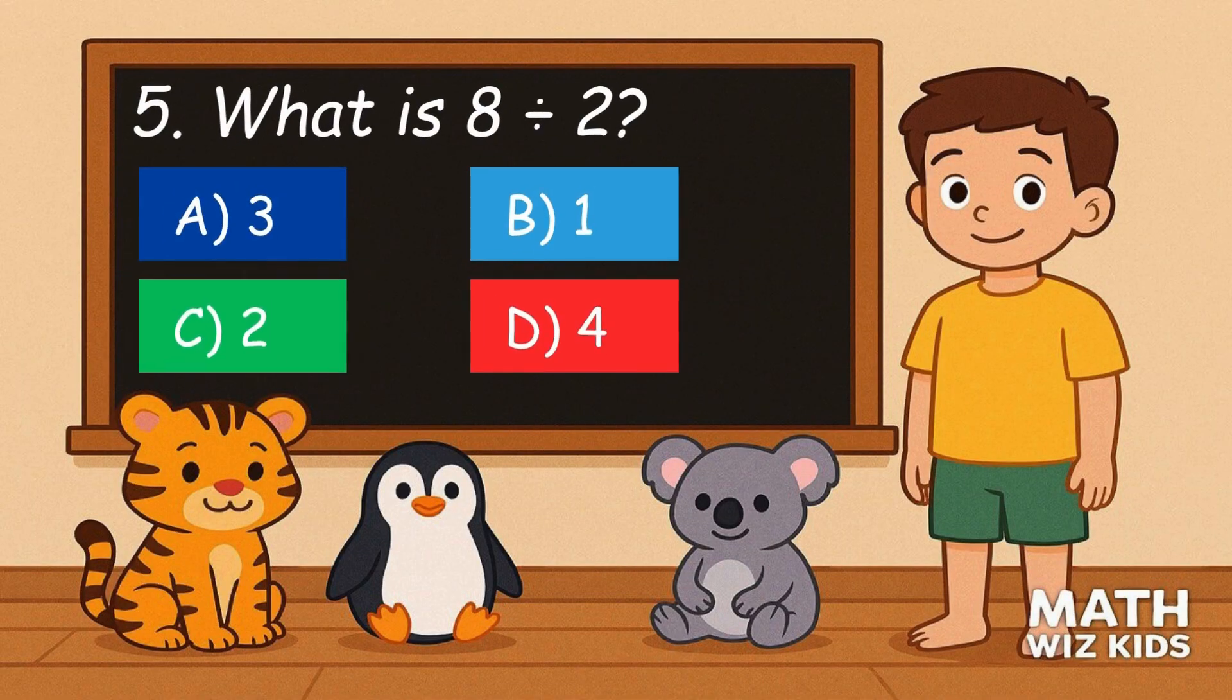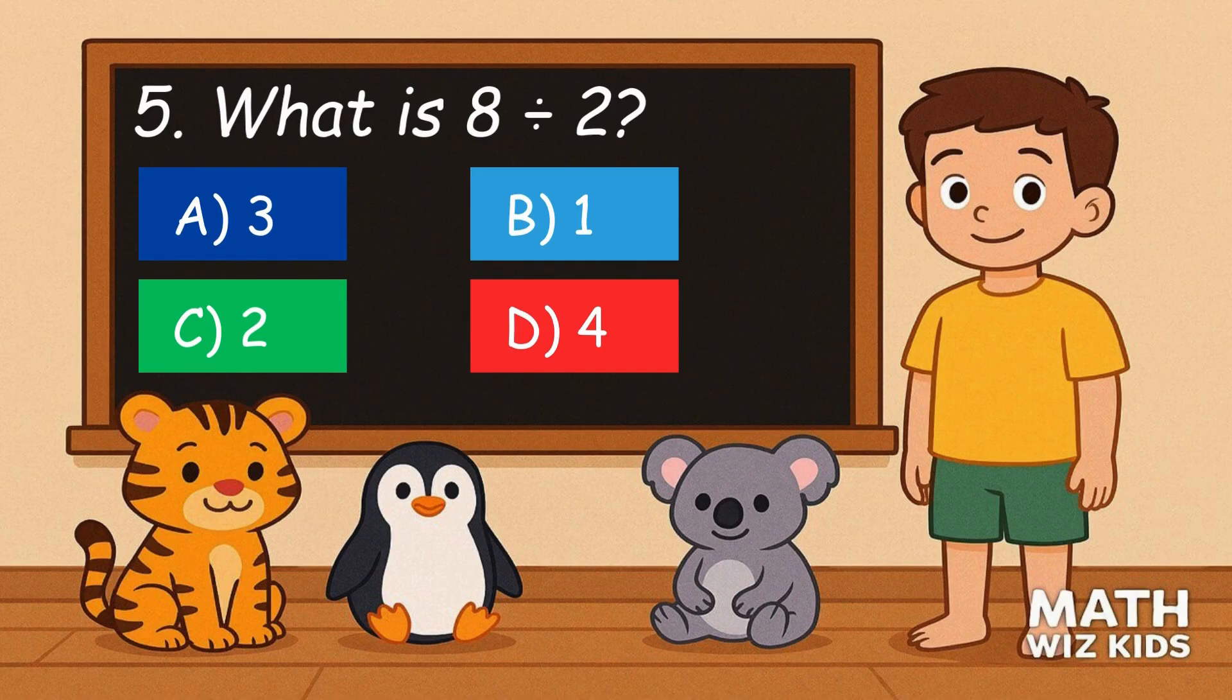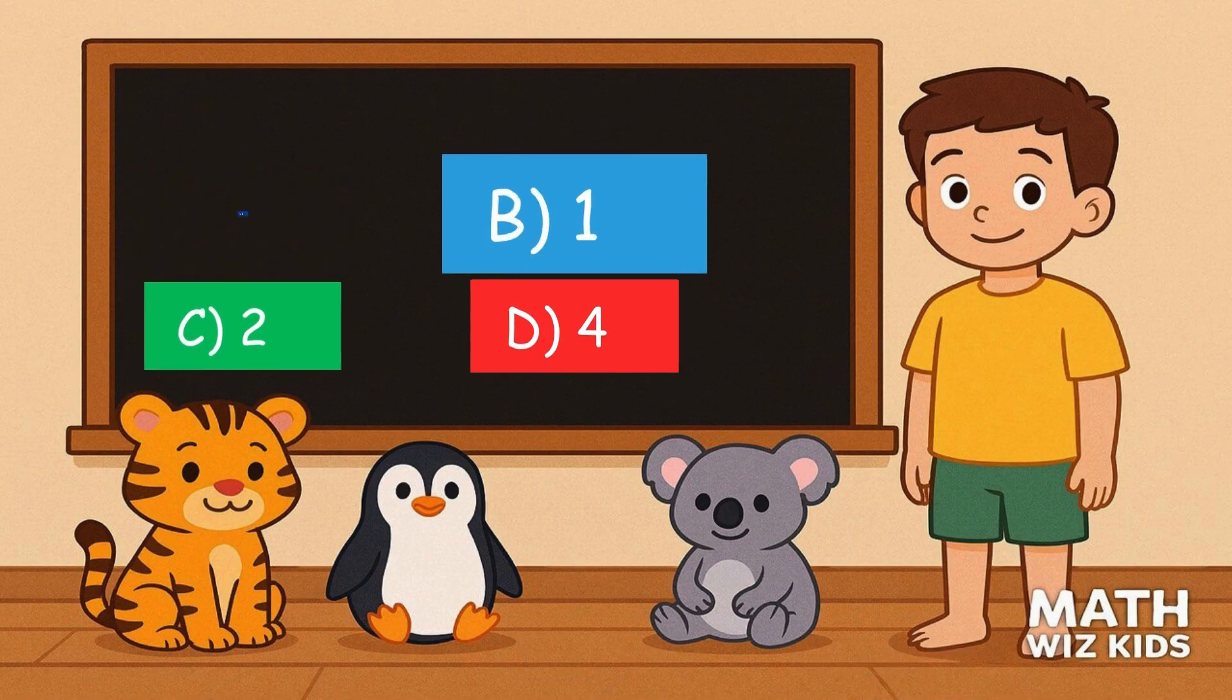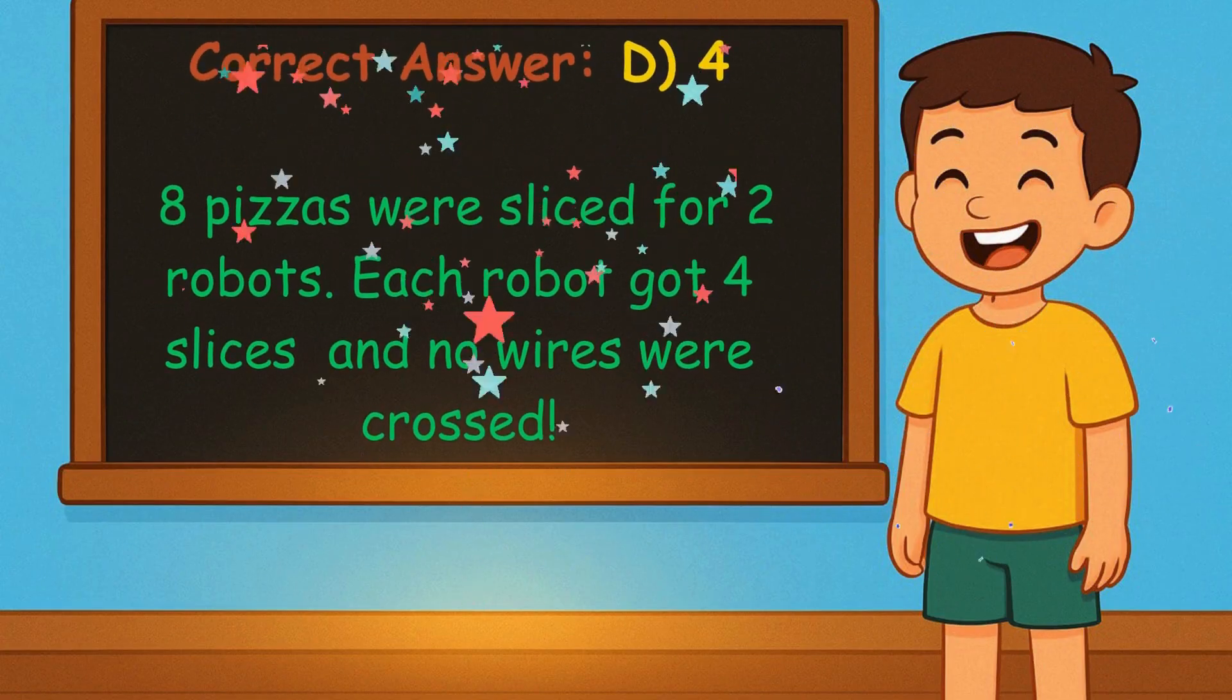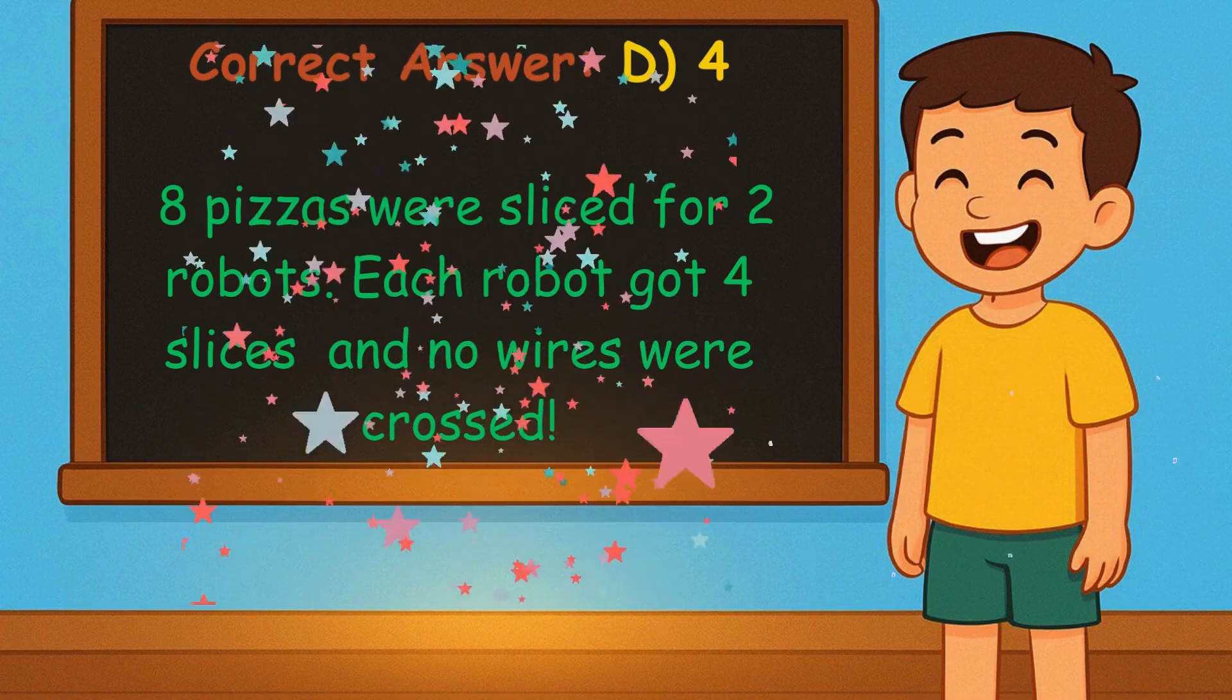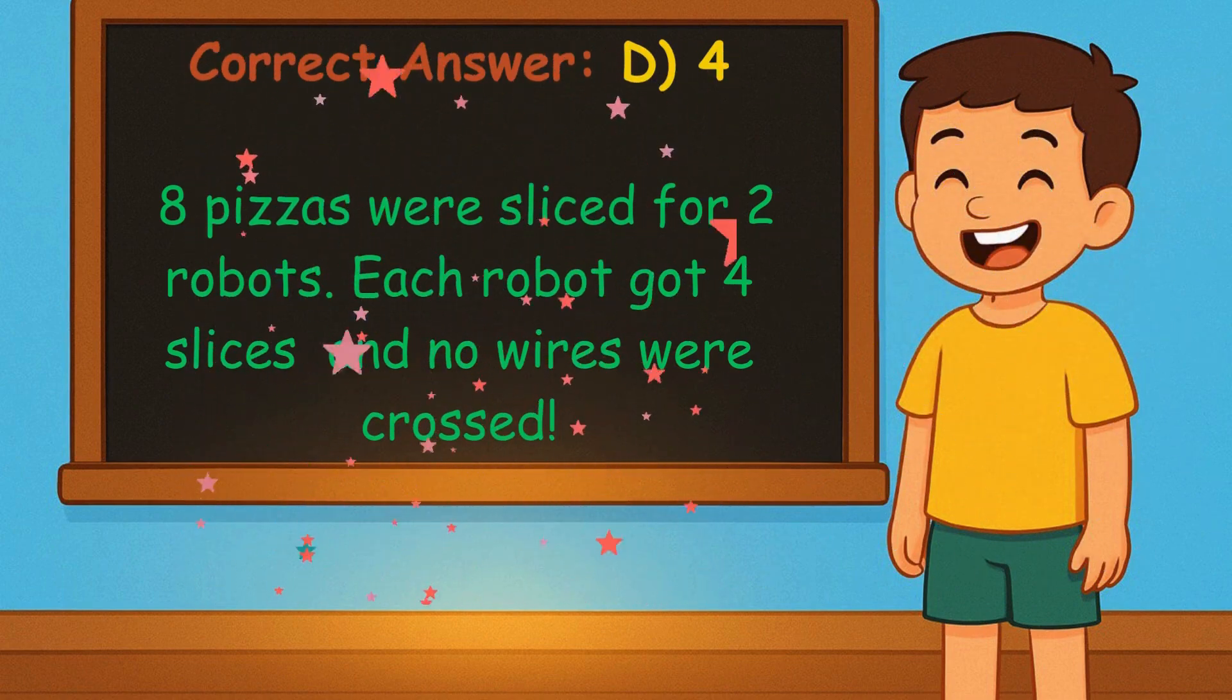5. What is 8 divided by 2? Is it A, 3, B, 1, C, 2, or D, 4? Correct answer is 4. 8 pizzas were sliced for 2 robots. Each robot got 4 slices, and no wires were crossed.